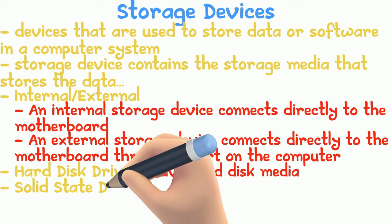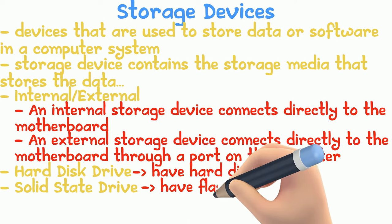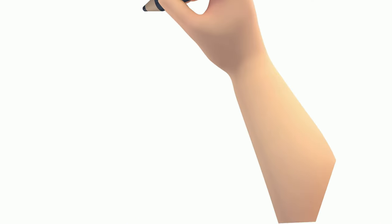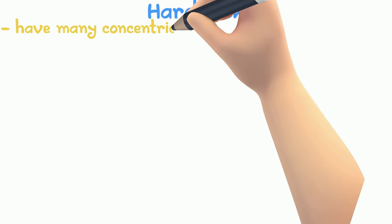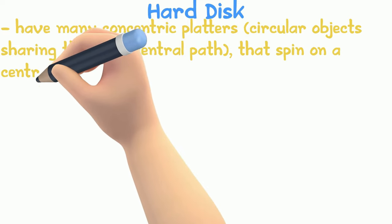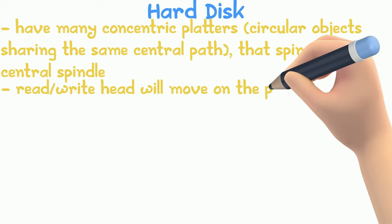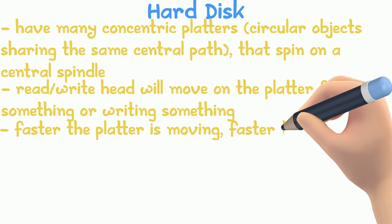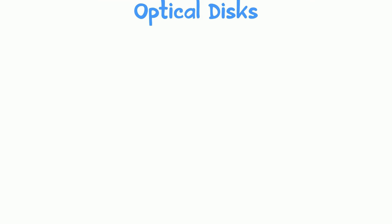Solid state drives (SSDs), often called flash drives, have flash media and have replaced hard disk drives in newer laptops. A hard disk has many concentric platters — circular objects sharing the same central point — pinned on a central spindle. As it spins, a read/write head moves on the platter. The faster the spinning, the faster data is fetched or written.